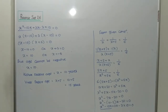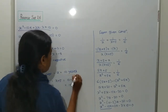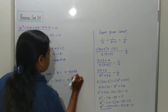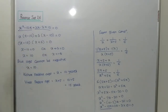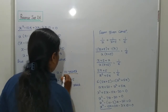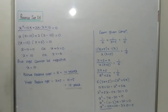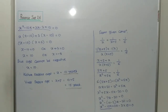This is the final answer: Kishore's present age is 10 years and Vivik's present age is 15 years. This is the answer to question number 4. Now we have to solve the next question.